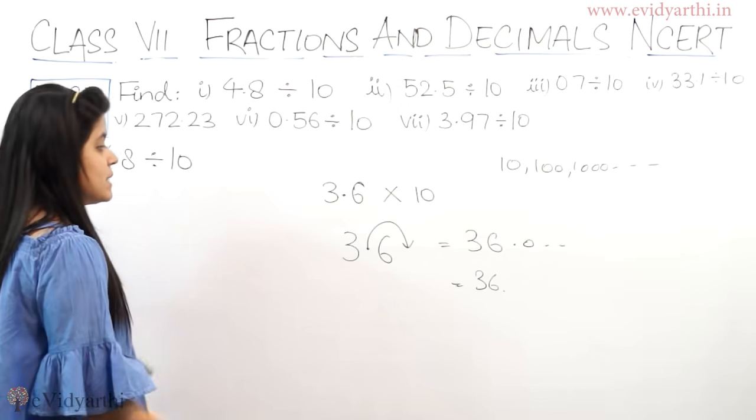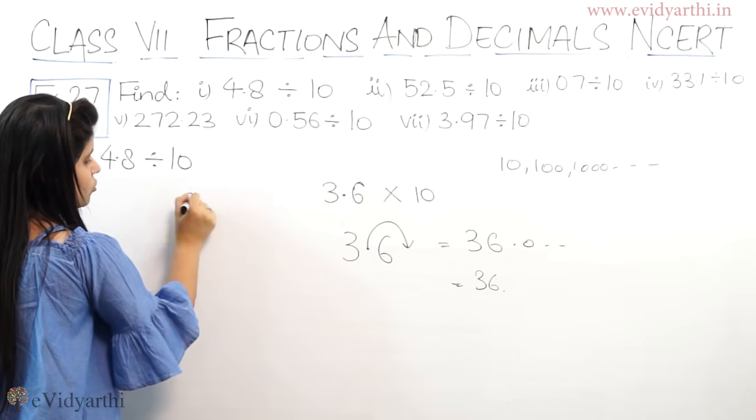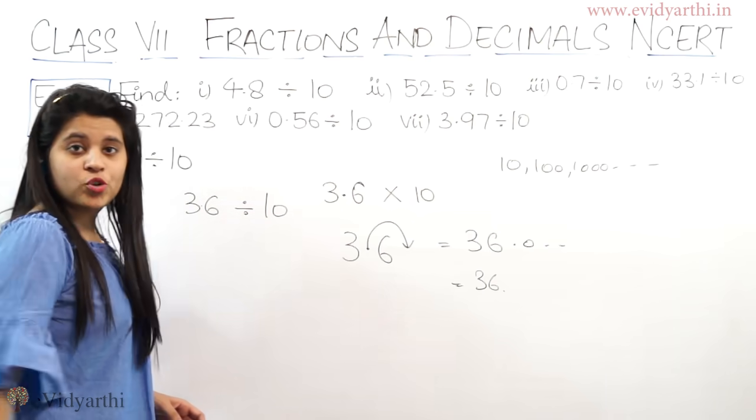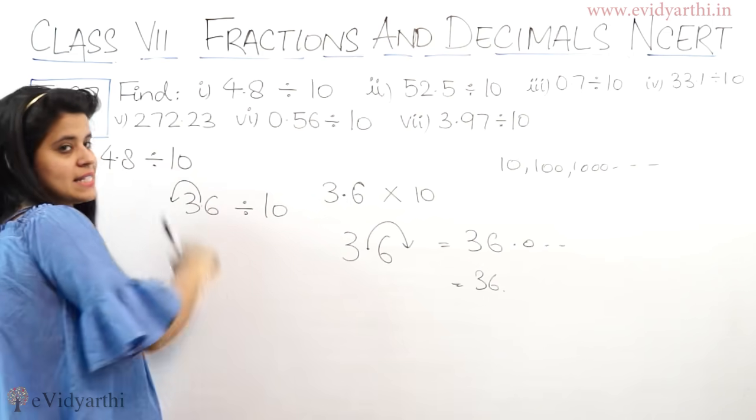Division is one place, right? In the sense, if you have 3.6 divided by 10, so what do we need to do? Decimal to left side shift.